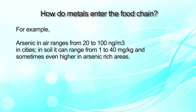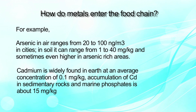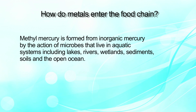For example, arsenic in air ranges from 20 to 100 nanograms per cubic meter in cities, whereas in soil it can be in the range of 1 to 40 ppm, and sometimes even higher in arsenic-rich areas. Cadmium is widely found in the earth at an average concentration of 0.1 milligram per kg, and accumulation of cadmium in sedimentary rocks and marine phosphates is about 15 milligram per kg. Methylmercury is formed from inorganic mercury by the action of microbes that live in aquatic systems including lakes, rivers, wetlands, sediments, soils, and the open ocean.